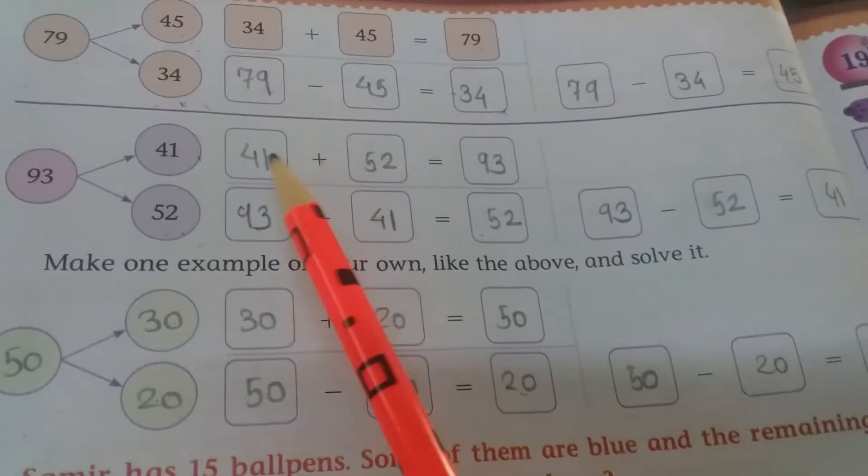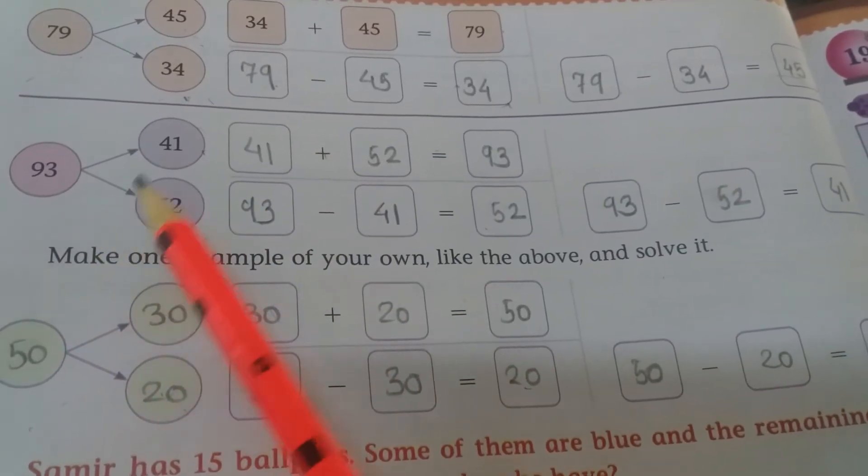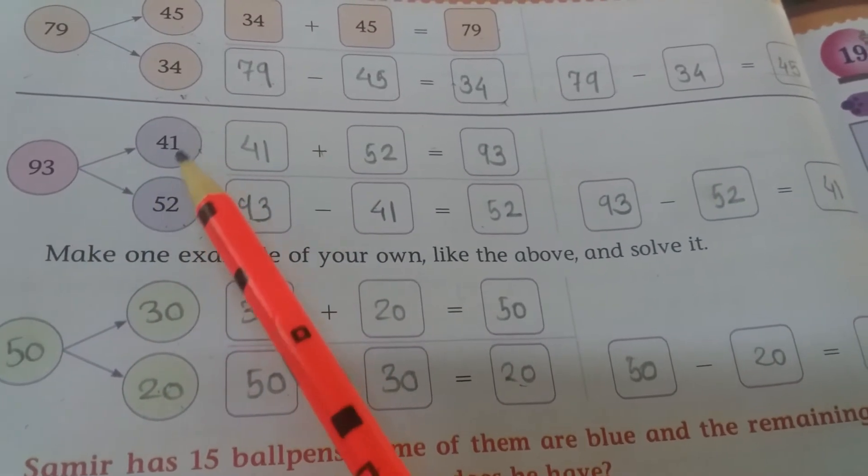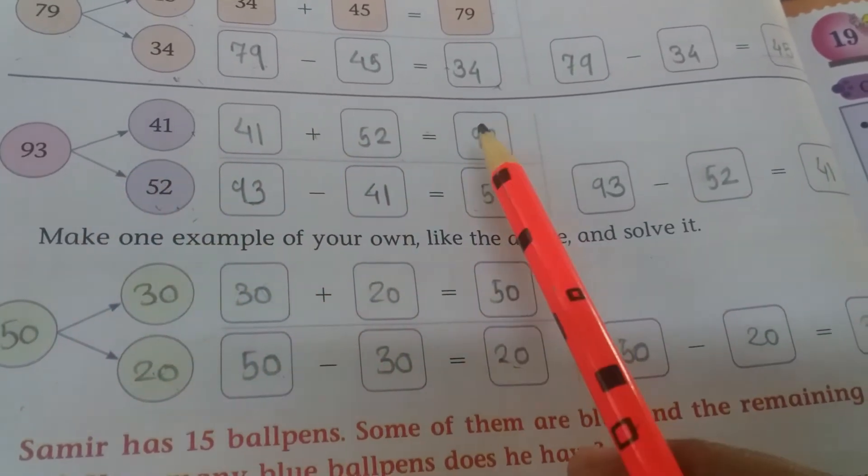First example, now like that way, second example children. 93, two numbers are given, 41 and 52. 41 plus 52, answer is here 93.